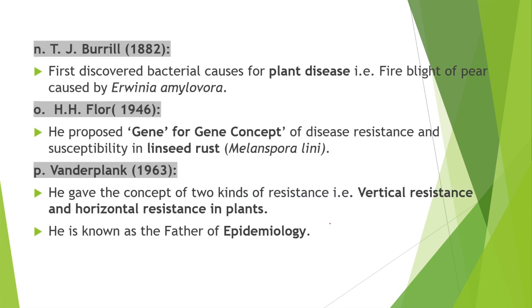T.J. Burrill discovered the bacterial cause of plant diseases, specifically fire blight of pear caused by Erwinia amylovora. H.H. Flor proposed the gene-for-gene concept of disease resistance and susceptibility in flax seed rust. Vanderplank gave the concept of vertical resistance and horizontal resistance in plants, and is known as the father of epidemiology.